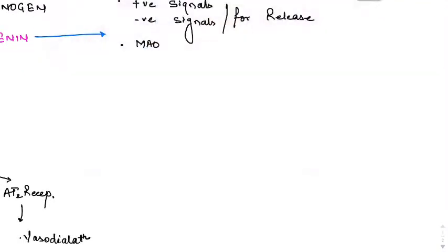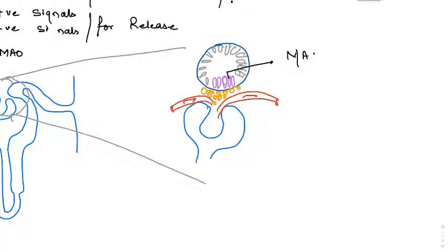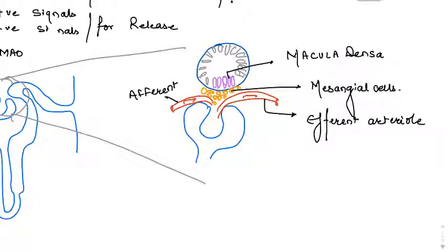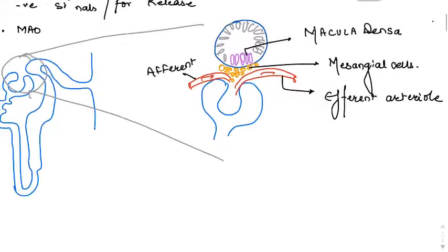Renin is synthesized in the juxtaglomerular apparatus. The nephron has a Bowman's capsule, a descending loop of Henle, an ascending limb, a thick ascending limb, a DCT, and collecting tubules. The juxtaglomerular apparatus consists of a specialized part of the DCT called the macula densa, the mesangial cells, and the efferent and afferent arterioles of the Bowman's capsule.